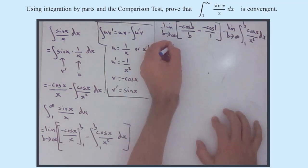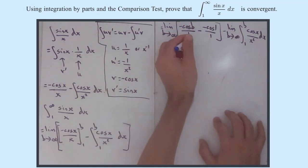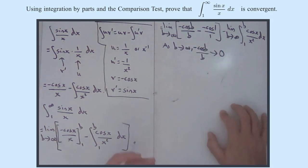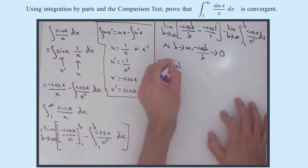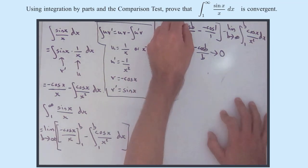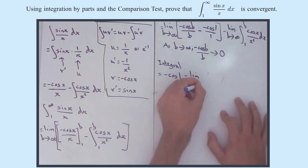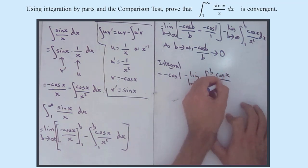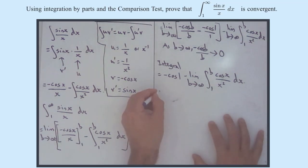Let's sort out the boundary term first. As b → ∞: cos(b) has a maximum of 1 and minimum of −1, so −cos(b)/b just approaches 0. That whole term therefore becomes 0 − (−cos(1)/1) = −cos(1). So now our integral equals −cos(1) minus the limit as b → ∞ of the integral from 1 to b of cos(x)/x² dx. This part clearly converges — we actually know its value — so this part of the expression converges.